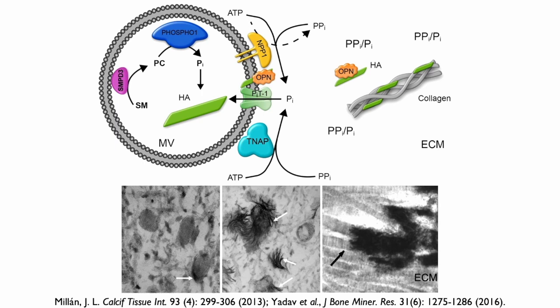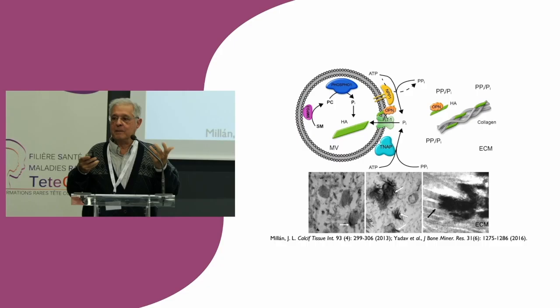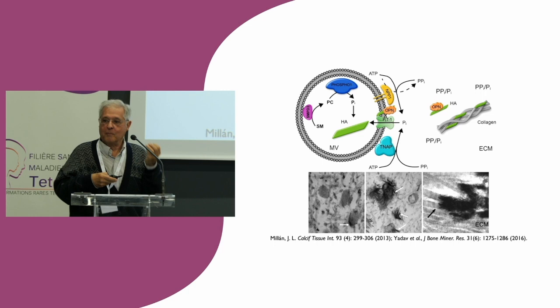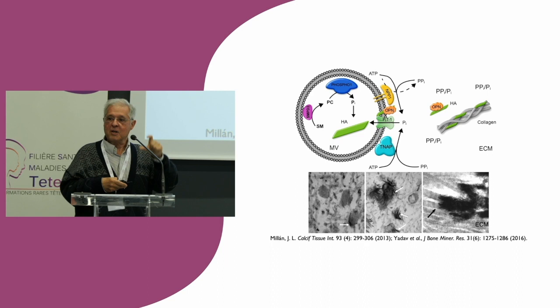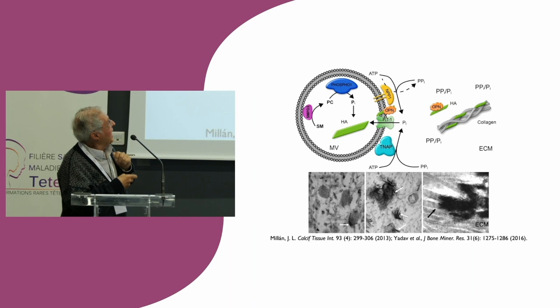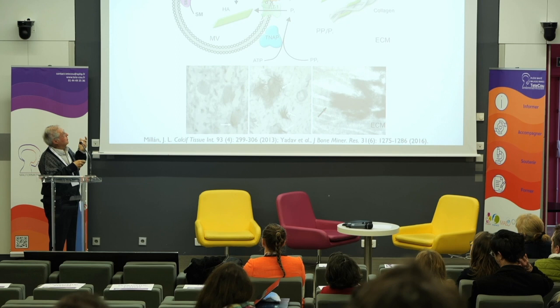We spent a number of years trying to understand how pyrophosphate is controlled. When I talk about pyrophosphate, I will switch to talking about the phosphate-to-pyrophosphate ratio, because both are really linked together. You have phosphate in the millimolar range, and pyrophosphate in the micromolar range. So a small change in pyrophosphate has a huge implication in the ratio. We tend to talk about the pyrophosphate-to-phosphate ratio, and this is essentially how the whole process takes place.